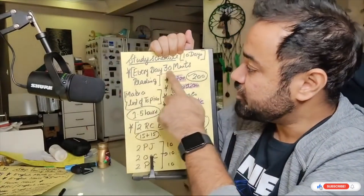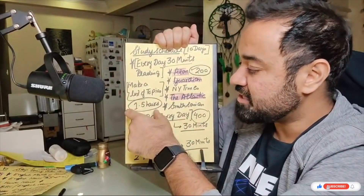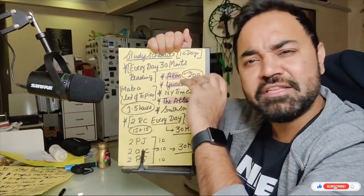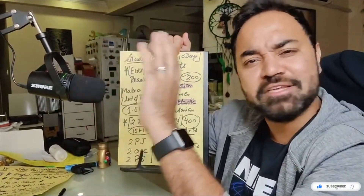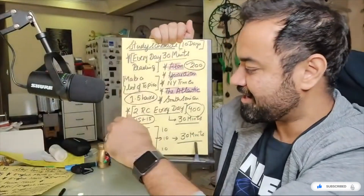That is 30 minutes, about half an hour, just for 10 days. This is the plan of 10 days — you will thank me later.